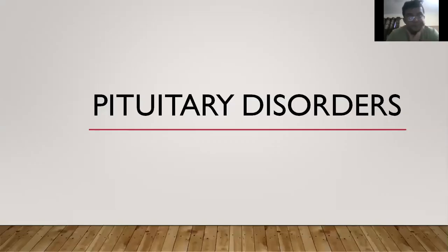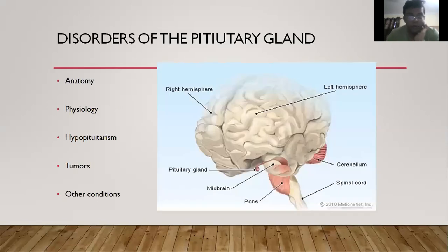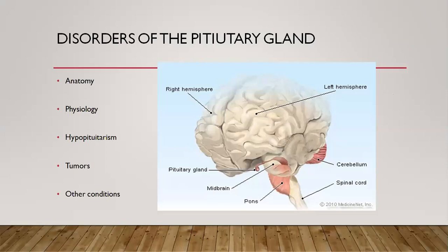Okay, so pituitary disorders. You are already familiar with where the pituitary is located. As you can see in this diagram, you've got the brain and the cerebrum out here, and this is the spinal cord and the pons, and this small projection which is hanging here is the pituitary gland.